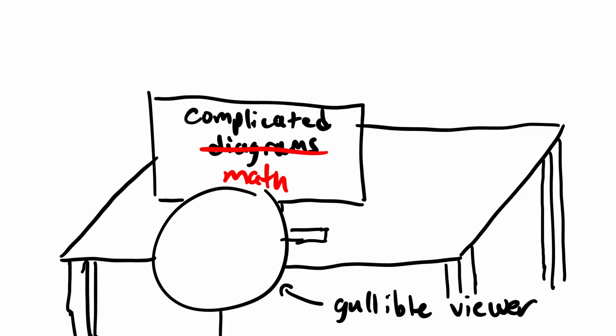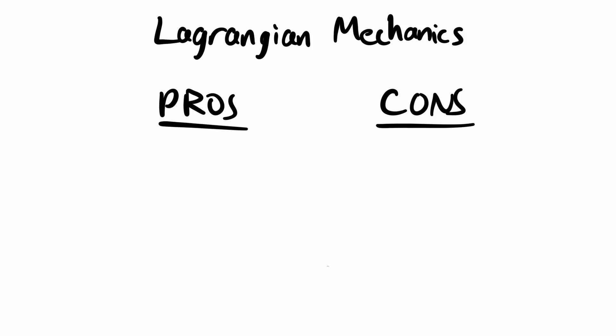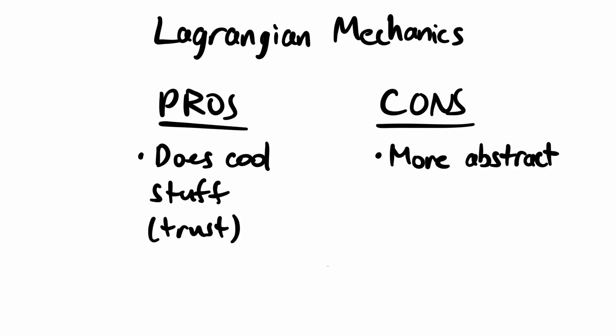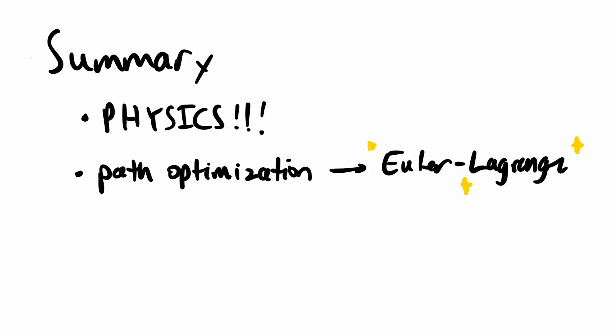So wait — did we just replace complicated diagrams with complicated math? Well, yes and no. It's definitely a lot more abstract than F equals ma, but I ask that you trust me that this equation can do a lot more cool stuff than F equals ma. Of course, like I said at the beginning, you don't have to understand all the specific math — the goal is to be exposed to the topic. But before we get ahead of ourselves, remember that this is a physics video. We figured out how to solve path optimization problems with our new shiny Euler-Lagrange equation, but our ultimate goal is to see how it applies to mechanics.